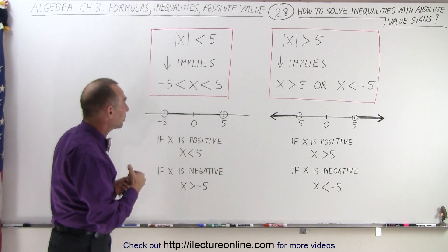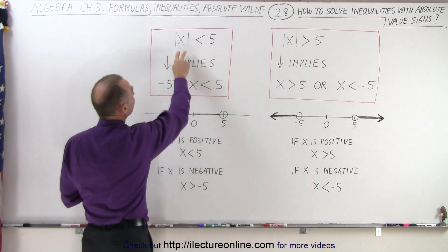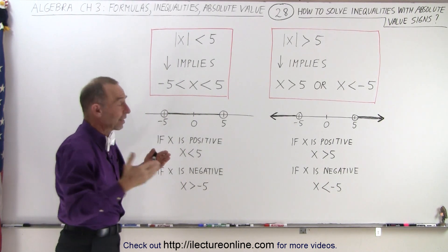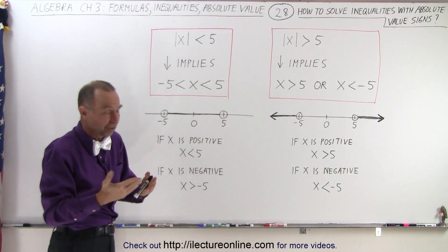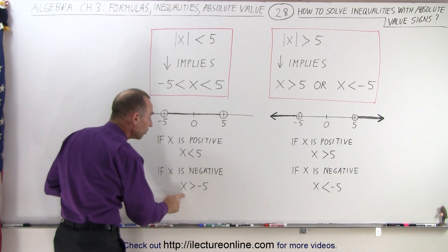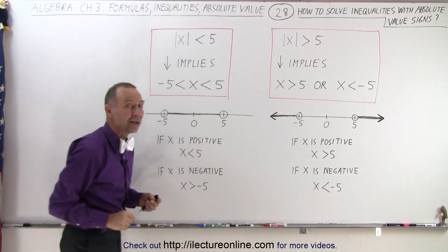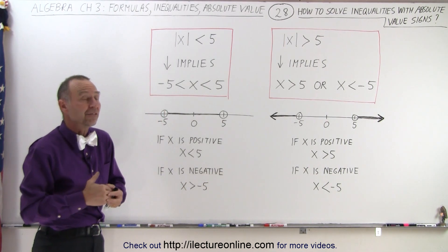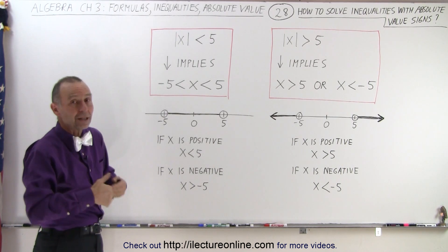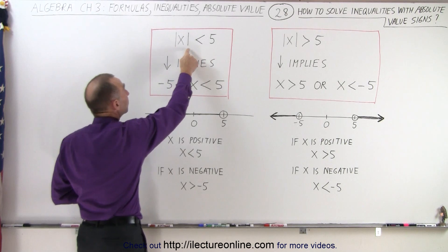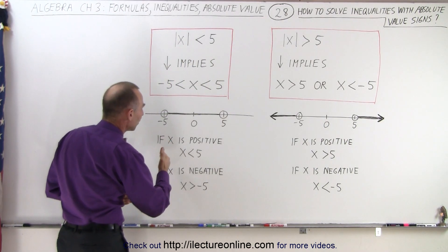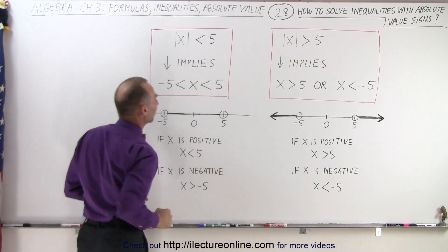But if x is a negative value, the absolute value of a negative value is still a positive value. For example, the absolute value of negative 1 is still 1, and the absolute value of negative 2 is still 2. So it means if x is a negative value, then x must be greater than negative 5. If x were negative 6, the absolute value of negative 6 is positive 6, and that would not be smaller than 5. So that's why x must lie somewhere between negative 5 and positive 5.